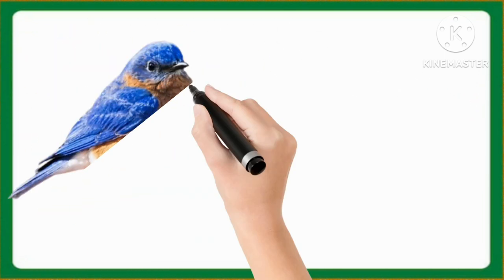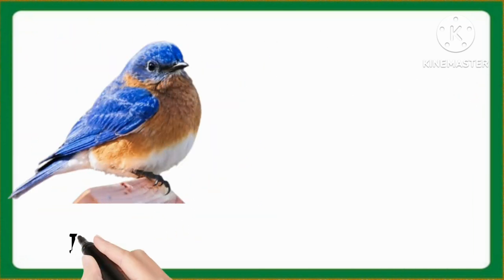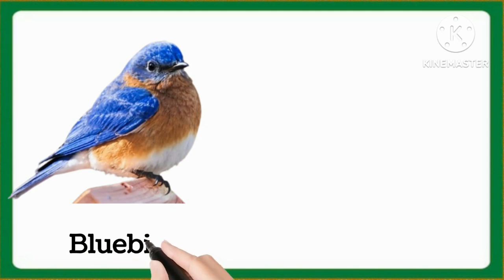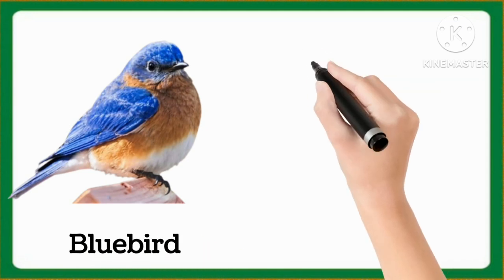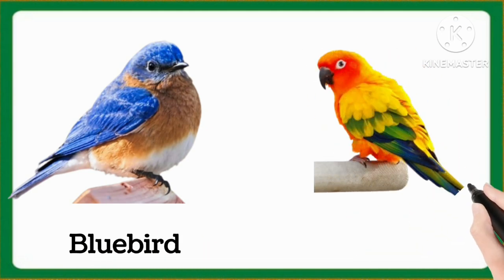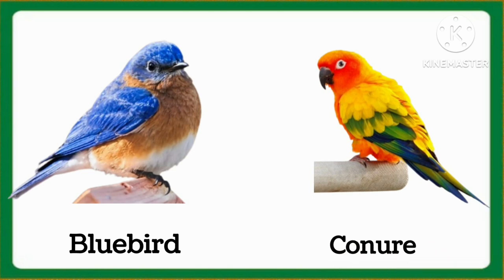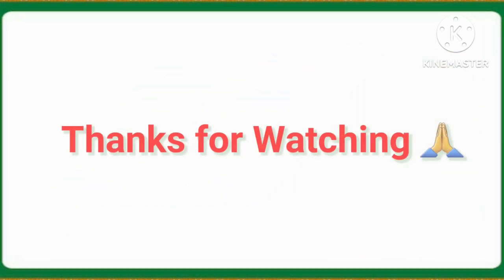And now tell me which word is this, kids? This is bluebird. Bluebird. And now tell me which word is this, kids? This is konyo. Thanks for watching.